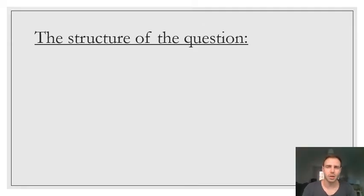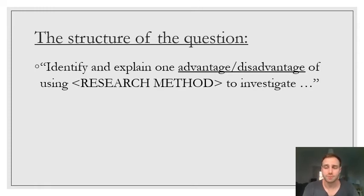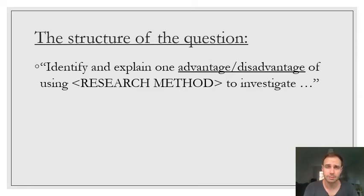The structure of the question always contains these words in the four mark methods in context question. It will ask you to identify and explain one advantage or disadvantage of using a specific research method — such as questionnaires, observations, or longitudinal studies — to investigate a specific context. In the exam, the context will relate to one of four topics: families, education, crime and deviance, and social stratification.